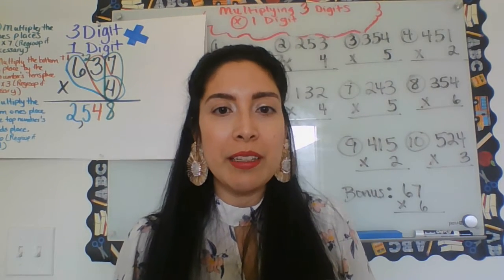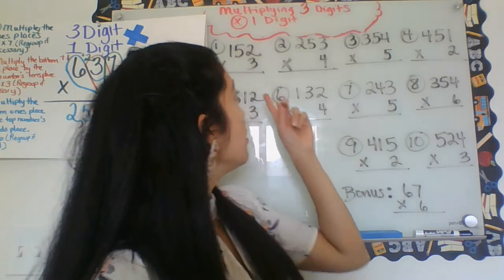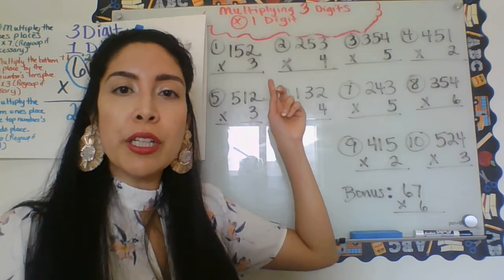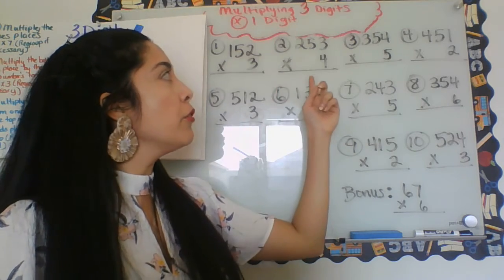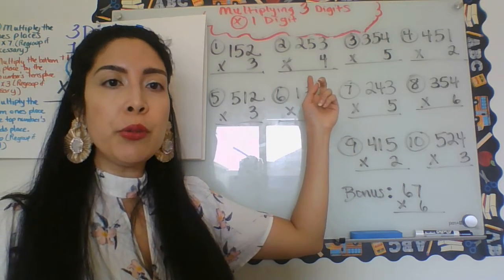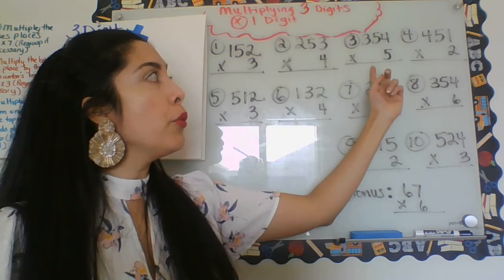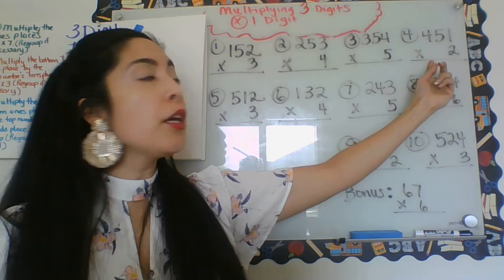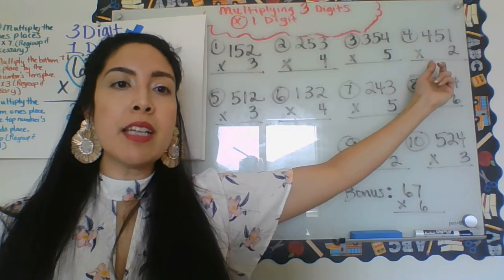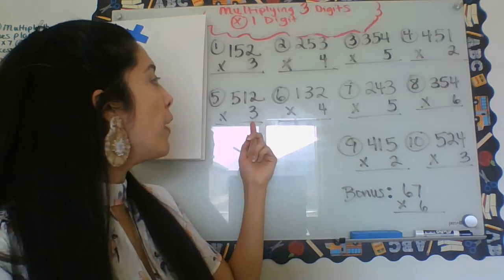Let's try some independent work on your own. So let's do number one: you're going to multiply 152 times three. Number two: 253 times four. Number three: 354 times five. Number four: 451 times two. Number five: 512 times three.